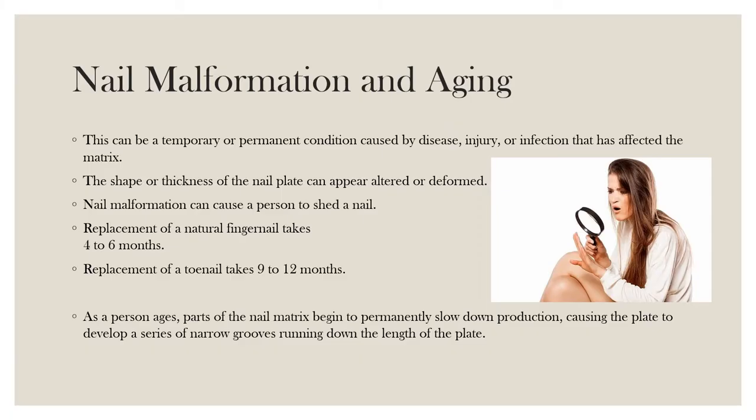If the nail is abnormal in shape or form, it is called a nail malformation. This can be a temporary or permanent condition caused by disease, injury, or infection that has affected the matrix. It can change the shape or thickness of the nail plate and can appear altered or deformed. These conditions are generally the only reason a person will shed a nail.